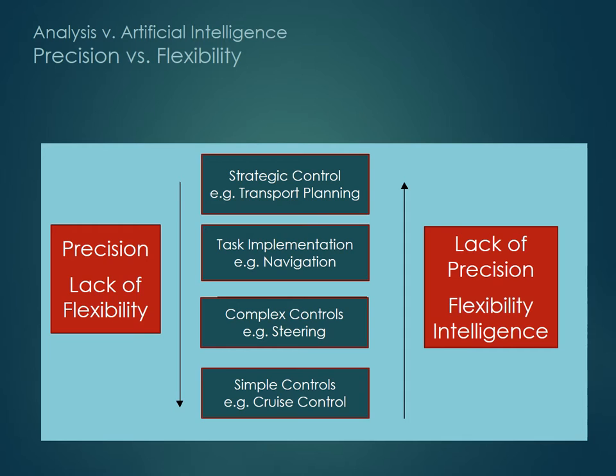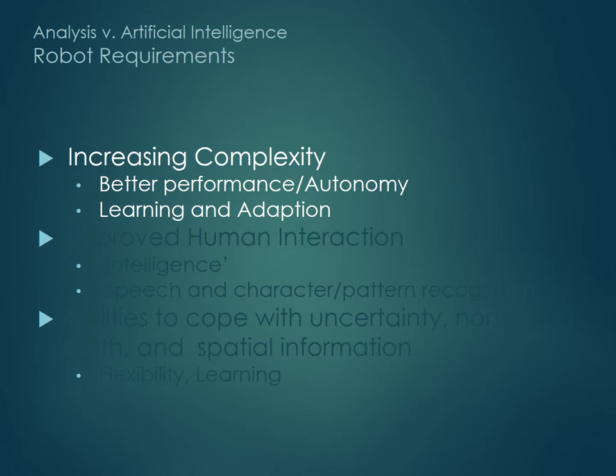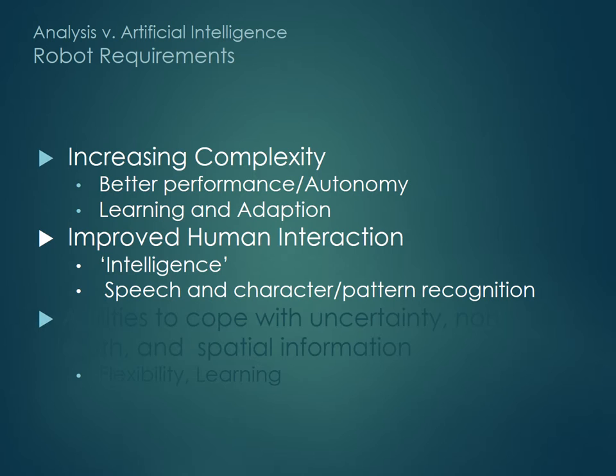This slide shows a transition from simple feedback controls of speed, which are easily implemented using analytical methods, up through more complex tasks such as steering through traffic, navigating from A to B, and finally managing a transport system, which require a different approach. Precision gives way to flexibility, adaptation and learning. So artificial intelligence approaches become important, as these are inherently nonlinear, parallel, imprecise and adaptive. This isn't just true for navigation, but also for human interaction, or anywhere that robots have to cope with the messy and uncertain surface of reality rather than any underlying simplicity.